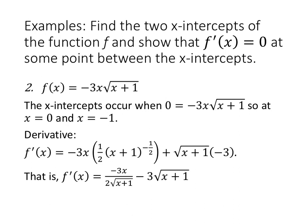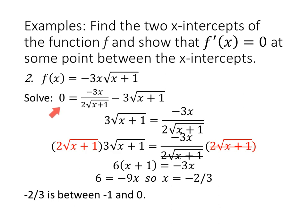We're looking for where the derivative is zero. Setting the derivative equal to zero and adding three times the square root of (X plus one) to both sides, then multiplying both sides by two times the square root of (X plus one) to clear the denominator, we get six times (X plus one) equals negative three X. Distributing: six X plus six equals negative three X. Subtracting six X: six equals negative nine X, so X equals negative two thirds. And negative two thirds is between the x-intercepts of negative one and zero.